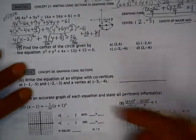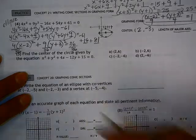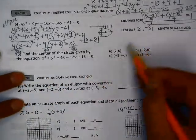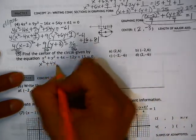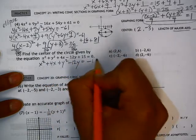Lastly, number 5, find the center of the circle given by this equation. In order to find the center, we need to get this into graphing form. And then we'll easily be able to identify the center. So let's group our x's and group our y's and move the 15 over to the other side.